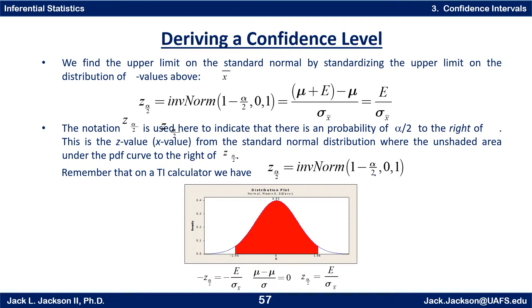We find the upper limit on the standard normal by standardizing the upper limit on the distribution of x-bar values. And we find that is z sub alpha over 2, which is inverse norm of 1 minus alpha over 2, with mean 0 and standard deviation 1. And that is the z-score, which is mu plus e minus mu over sigma of the x-bars, which is just e over sigma of the x-bars.